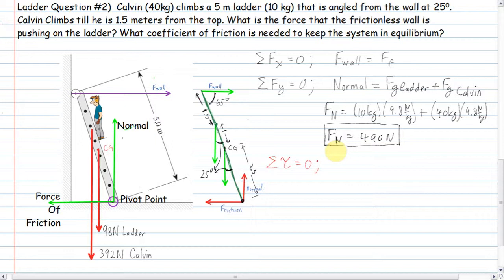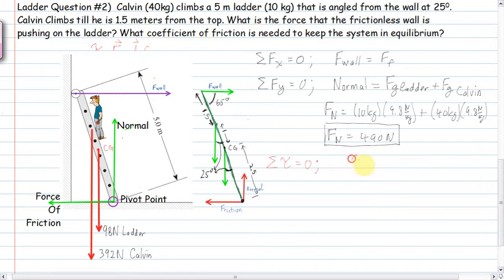At this point we ignore the forces at the pivot point — but why? Because of the torque formula: torque equals the force cross-product with the distance, which gives force times distance times the sine of the angle between the force and the displacement vector from the pivot point to where the force is applied. If the distance to the pivot is zero, the torque is zero.